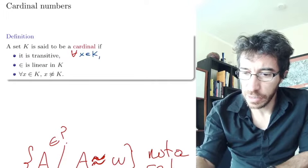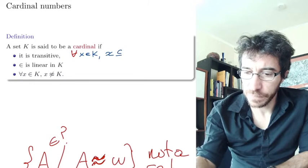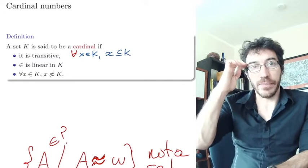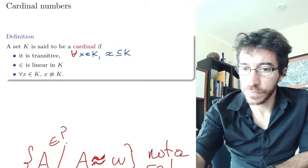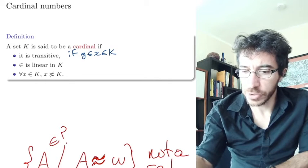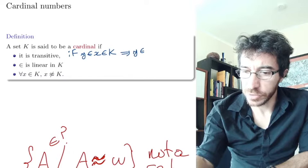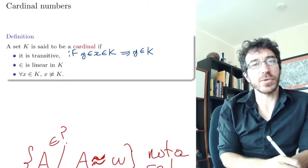X that belongs to K, X is a subset of K. Or in other words, if Y belongs to X and X belongs to K, then Y belongs to K. That's what transitive means.